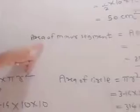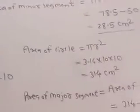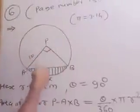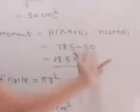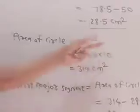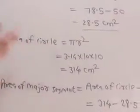It is the area of triangle PAB. Then area of minor segment equal to area of sector AXB minus area of triangle PAB. So 78.5 minus 50 equals 28.5 cm square.